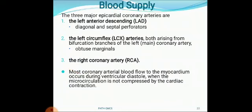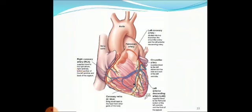Now, the blood supply of the heart. There are three major epicardial coronary arteries: the left anterior descending artery, the left circumflex artery, and the right coronary artery. Most coronary arterial blood flow to the myocardium occurs during ventricular diastole, when the microcirculation is not compressed by cardiac contraction. The circumflex artery supplies the left atrium and back of the left ventricle. The LAD supplies blood to the front and bottom of the left ventricle and the front of the septum. The right coronary artery supplies the right atrium, right ventricle, bottom of the left ventricle, and back of the septum.